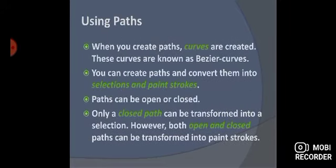Next we have using paths. Paths convert selections and paint strokes. Paths can be both open and closed. Only closed paths transform into selections, while both open and closed paths can be transformed into paint strokes.